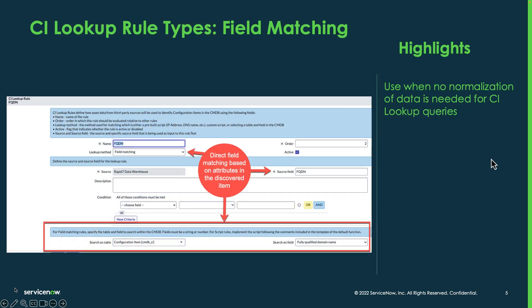Moving on, we've got CI lookup rules. There are a couple of different types. The first is a field matching type of CI lookup rule, and this is used when you don't need any kind of normalization or special processing. You can just use the straight value that comes in the payload and use that to try to find a match.